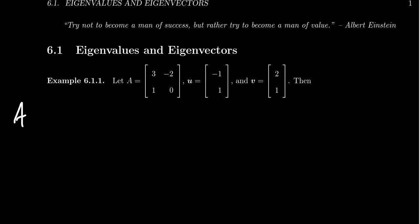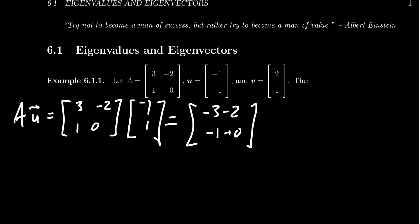And so if we start just to do the product of these things, let's take A times U first: 3, negative 2, 1, 0, times U, which is negative 1, 1. By the usual rules of matrix multiplication, we end up with negative 3 minus 2 for the first entry and negative 1 plus 0 for the second. That would simplify to negative 5 and negative 1. And so that's the first product you have right there.